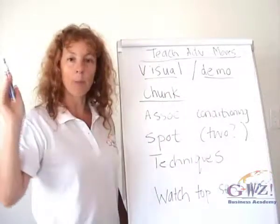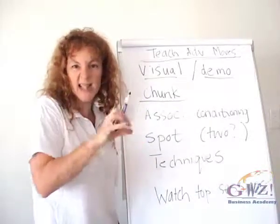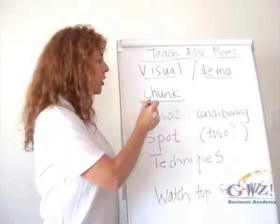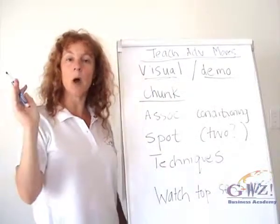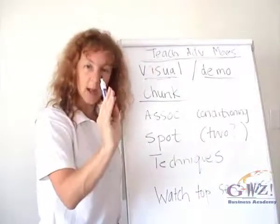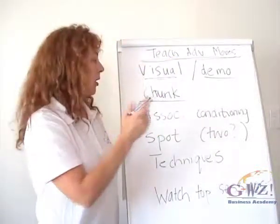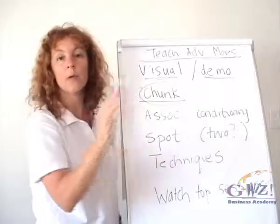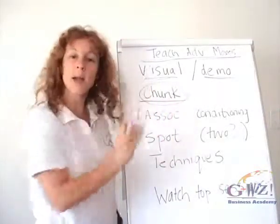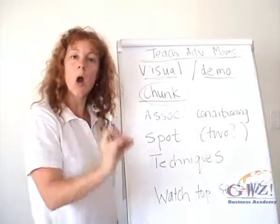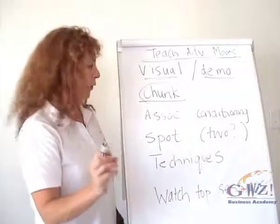Secondly, break the movement down. I call it chunking it, because you chunk it down into bite-sized chunks to be able to teach it. If you're talking about the flick-flack, you've got your first lean-back part, your snap into handstand part, your handstand snap-down part — three, four, or five movements that you've broken down and can practice separately, long before the child actually puts it all together and does it for the first time.